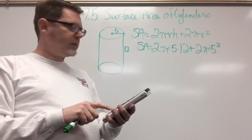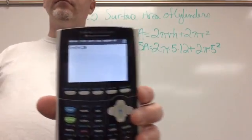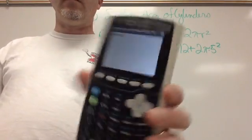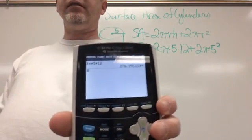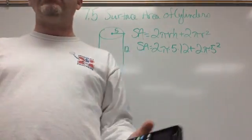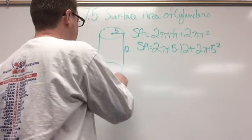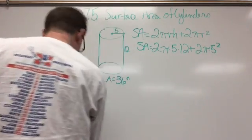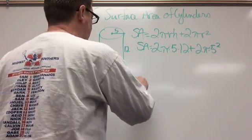2π times R, which is 5, times 12, just like that. And then we're going to hit Enter, and that's going to give me my lateral, 376.99. And we always round to the hundredth, and so our lateral area equals 376.99.